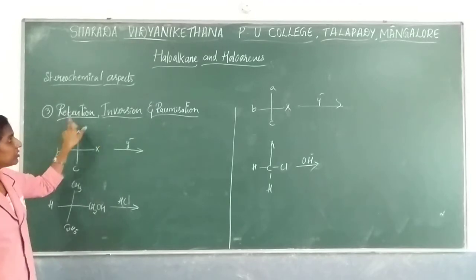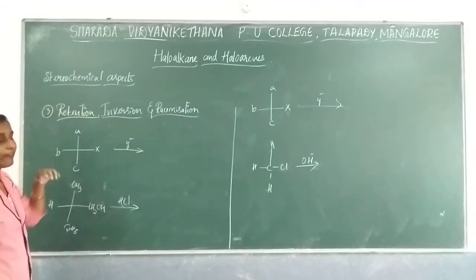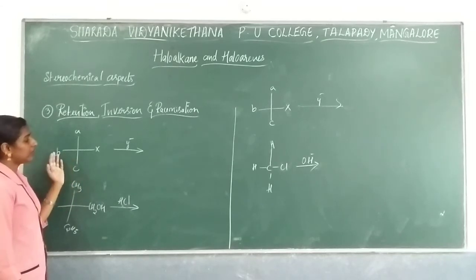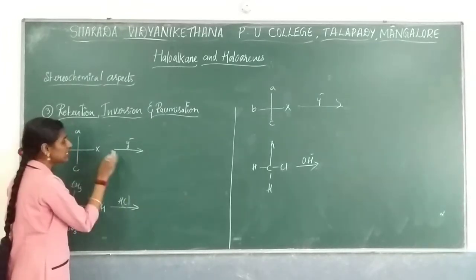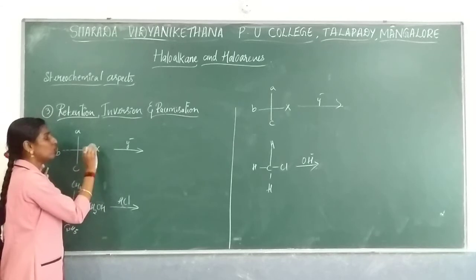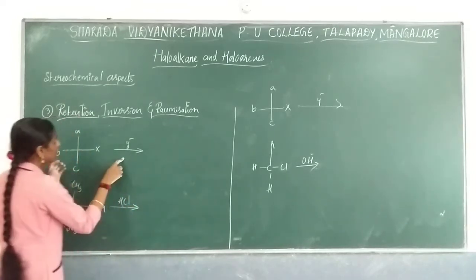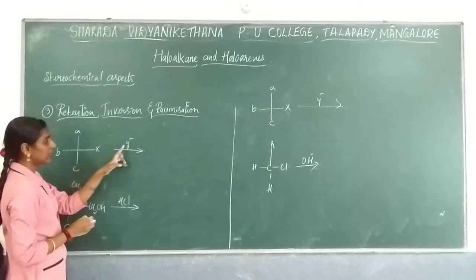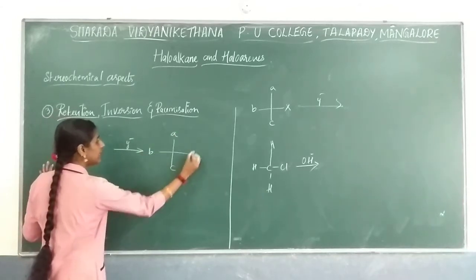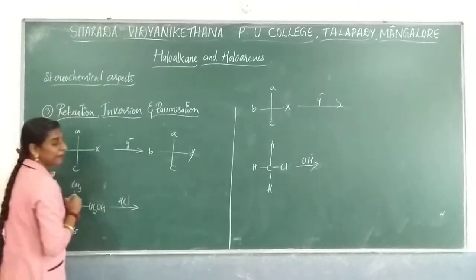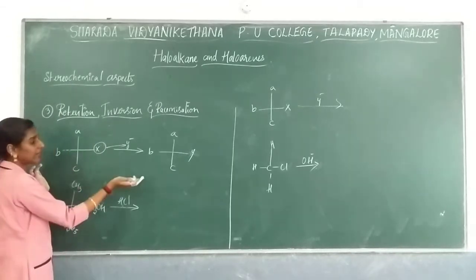The next topic is retention, inversion, and racemization. Retention means the reactant and product structure remains as it is — just one group is replaced at one place. The structure will retain. If you consider a halogen group is present and Y-minus comes as a replacement group, it gets replaced as A, B, C — only the halogen X is replaced by Y, all other groups remain as they are. That will be considered as retention.